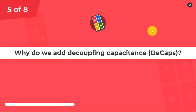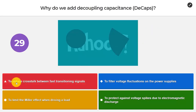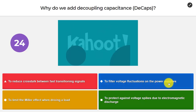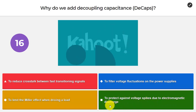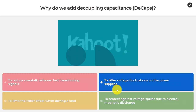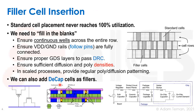Question number five: why do we add decoupling capacitance (DCaps)? To reduce crosstalk between fast transitions, to filter voltage fluctuations on the power supplies, to limit the Miller effect when driving a load, or to protect against voltage spikes due to electromagnetic discharge? I think it's going to be to filter voltage fluctuations on the power supplies.